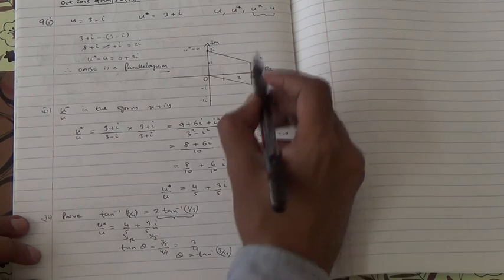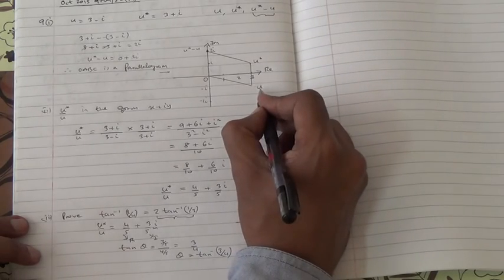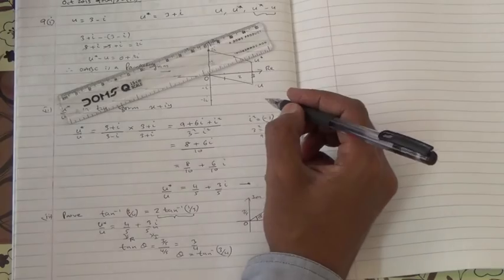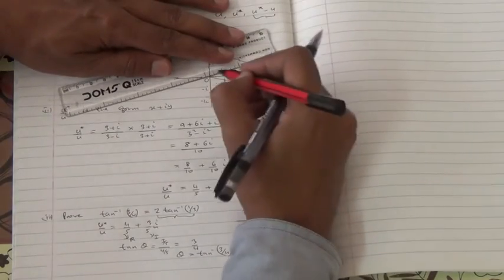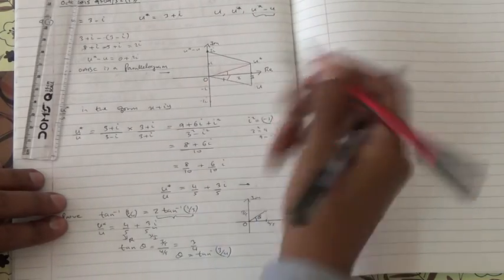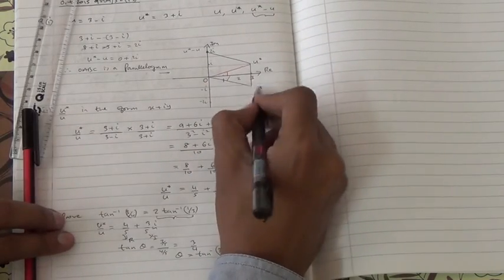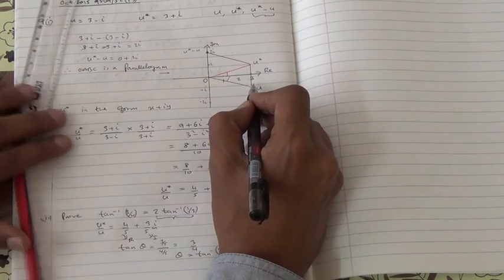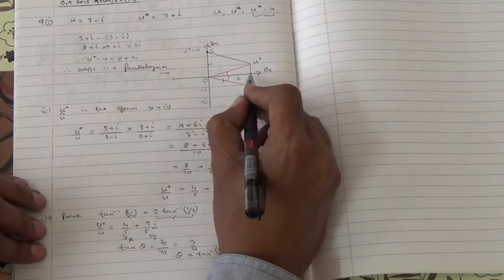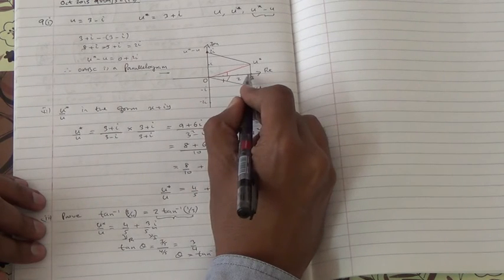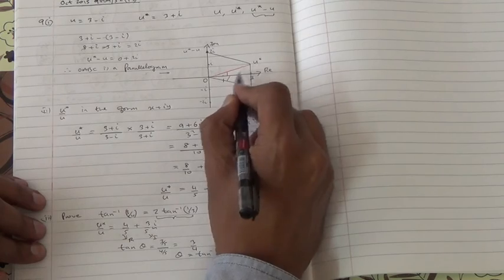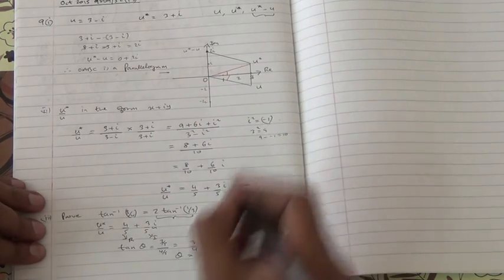We have to prove that this is equal to 2 times inverse of 1 third. Now if you look at the u star here and u here, what basically we're looking at is... Now what is this argument and what is this argument? So these two arguments are going to be these two. And this argument here is, this is the base is 3. Opposite is 1. So that's 1 over 3. So the tan here is 1 over 3.